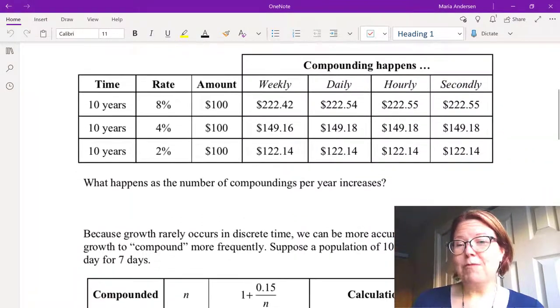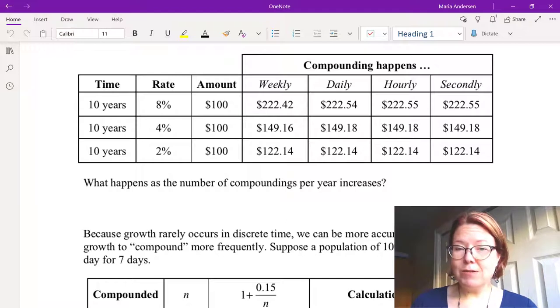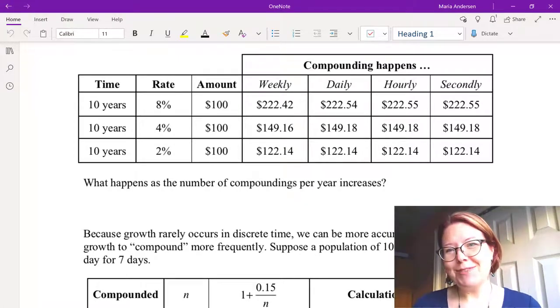I've created a table of values for us using a time of 10 years, an amount of $100, and various interest rates: 8%, 4%, and 2%. I've calculated the balance in the account after 10 years if we do the compounding weekly, daily, hourly, or secondly, that is every second.